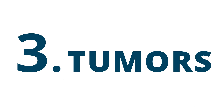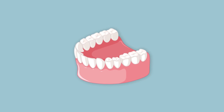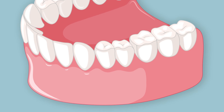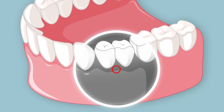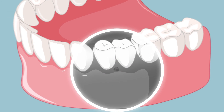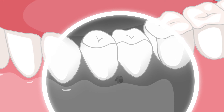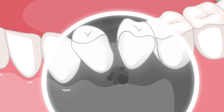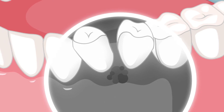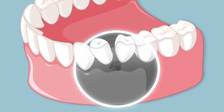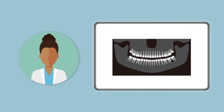Number three: tumors. Tumors develop from abnormal cells around the teeth or jawbone. Most tumors are benign and do not spread to other sites in the body. However, they can grow and cause expansion of the jawbone and movement of the nearby teeth. Consistent x-rays can lead to early detection and treatment of tumors.